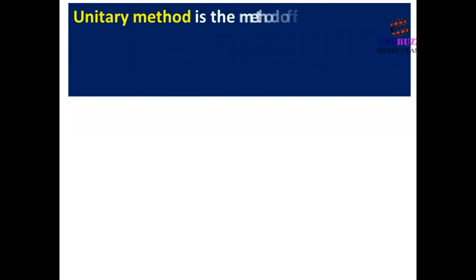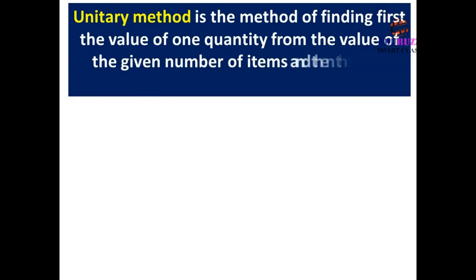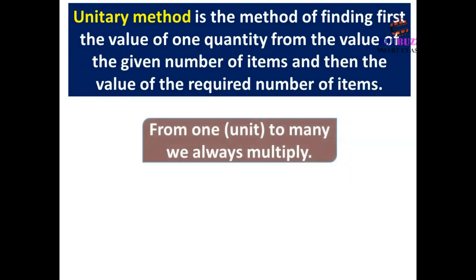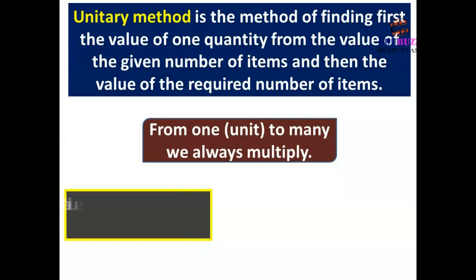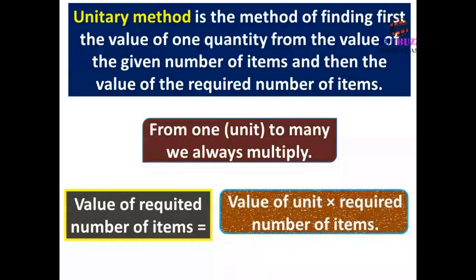The unitary method finds first the value of one quantity from the value of a given number of items, and then the value of the required number of items. From one unit to many, we always multiply. Value of required number of items = value of one unit × required number of items.